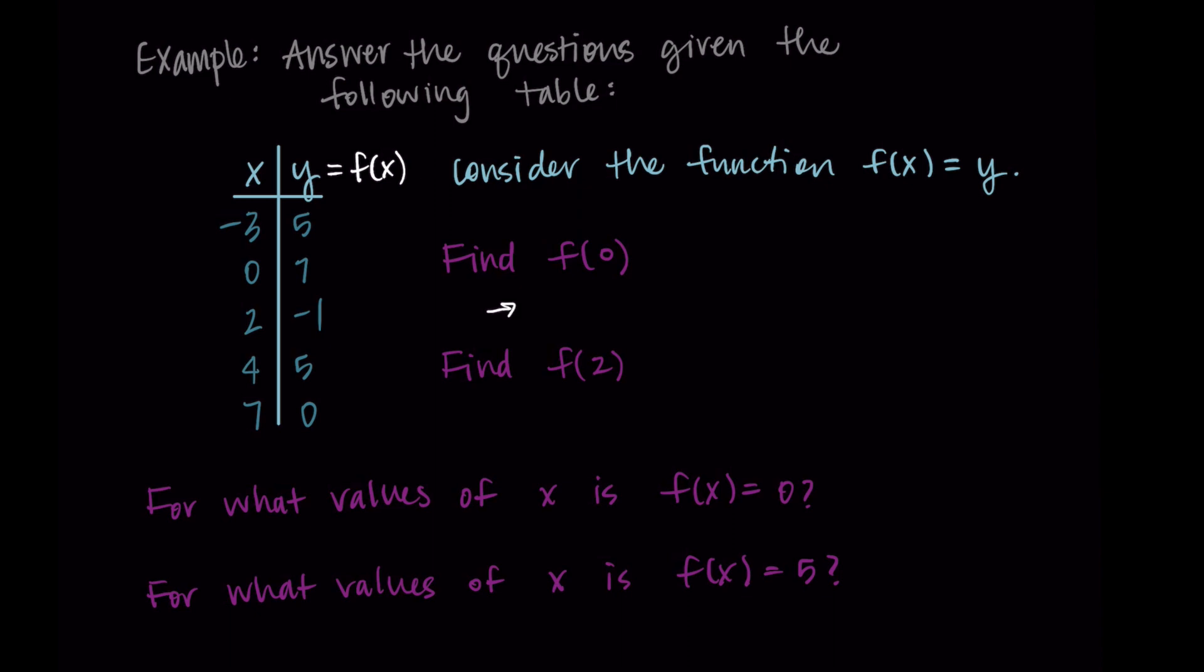So let's start with finding f of zero. With our function notation, zero is our input or our x value. So we can find zero in the input column, and then look for the corresponding output value. So f takes zero and output seven. This means f of zero is equal to seven. So seven would be our answer.